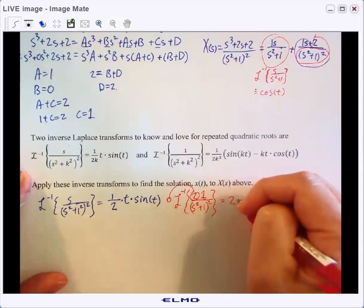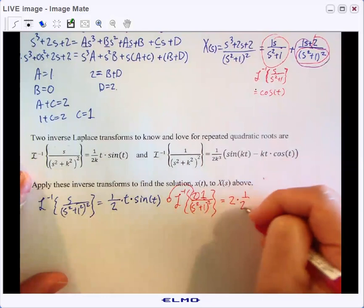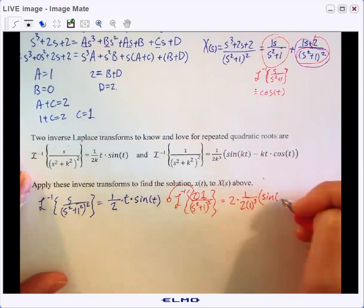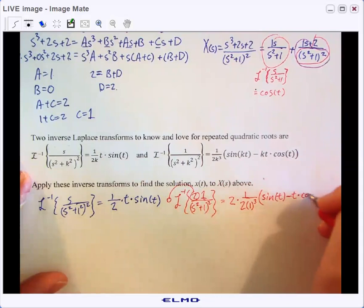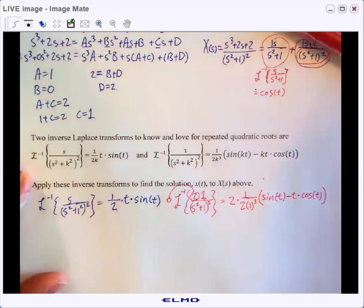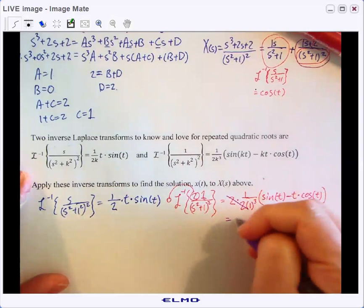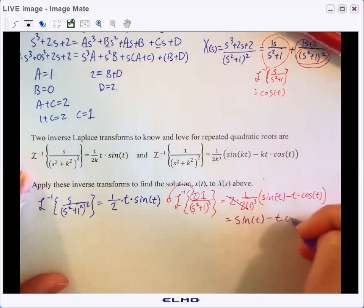So we would get two times recognizing that K is one again, one over two times one cubed times sine of one T minus one T times cosine of T. And oh, even better, the twos will divide out and we will get simply sine of T minus T cosine of T.